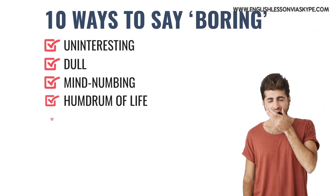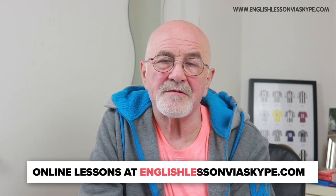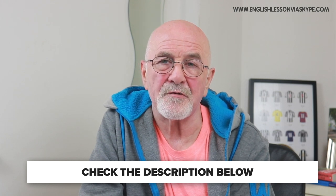So to recap all the words and expressions we've looked at for saying boring in different ways: uninteresting, dull, mind-numbing, the humdrum of life, bland, mundane, tedious. And some expressions: I was dying of boredom or dying from boredom, it does nothing for me, and about as interesting as watching paint dry or watching the grass grow. Thanks for listening, and don't forget to subscribe to the channel and join me on my website for more interesting aspects of the English language.